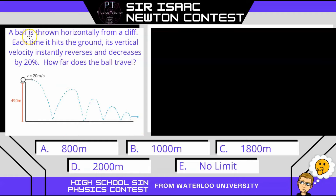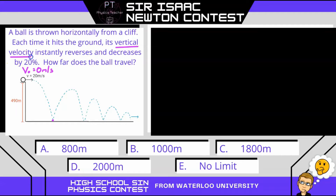All right, so in this question, we have a ball that's thrown or rolled off of a cliff going horizontally with a speed of 20 meters per second. That means its initial Y speed, let's call that V naught, is 0 meters per second. And it's going to fall, and then when it hits, it's going to bounce, and its vertical velocity instantly reverses and decreases by 20%. And then it asks what is the range of this projectile.